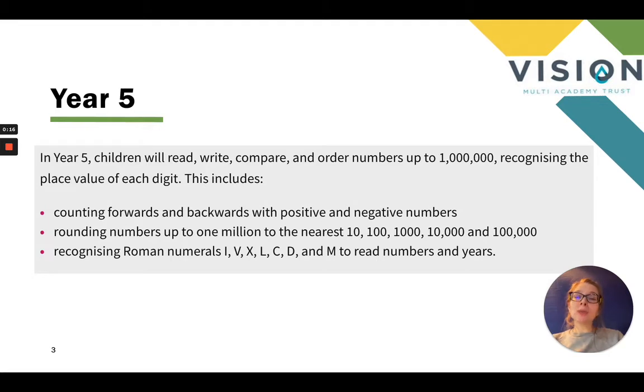So in Year 5, children will need to be able to read, write, compare and order numbers up to 1 million and recognizing the place value of each digit. This includes counting forwards and backwards with positive and negative numbers, rounding numbers up to 1 million to the nearest 10, 100, 1,000, 10,000 and 100,000.